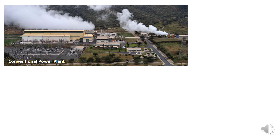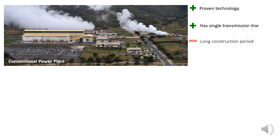Comparing both systems, there are benefits and drawbacks for each. Starting with the conventional power plant, the two main advantages are: it is a proven technology because it has been used for decades, and it requires a single transmission line because electricity generation is centralized. However, the main disadvantages are the long time to get power output — mainly because it takes long to construct and start operating — and high capital cost, because plants need a steam gathering system to deliver geothermal fluid to the power plant.